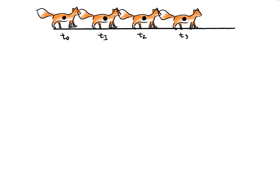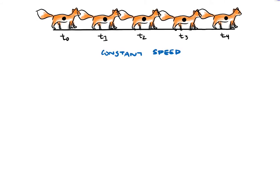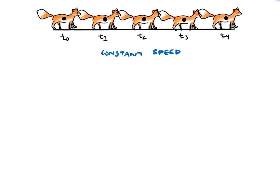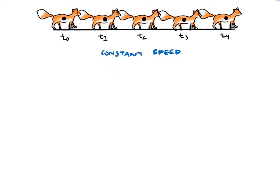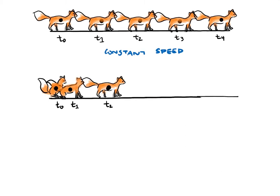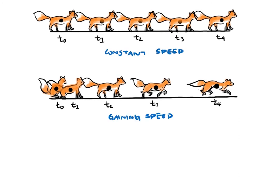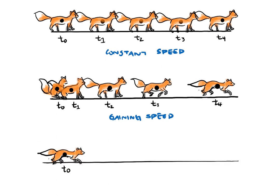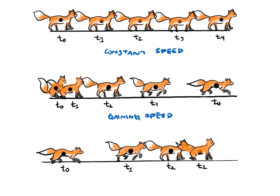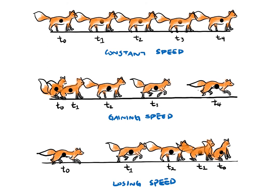This is a fox trotting along at a constant speed, with its position recorded at regular intervals of time — we can see that the fox covers the same distance every time. This is a fox that steadily gains speed from rest; each position marker is placed further and further apart to show more distance covered each time. This is a fox that's running at first, then steadily slows down; each position marker is placed at decreasing distances. In these strobe photograph diagrams, we've been labeling the fox's position at different times.